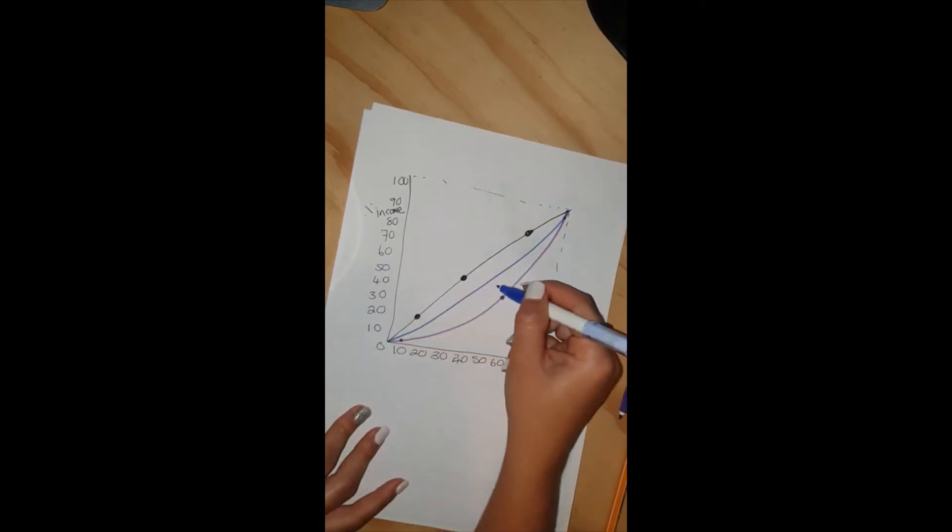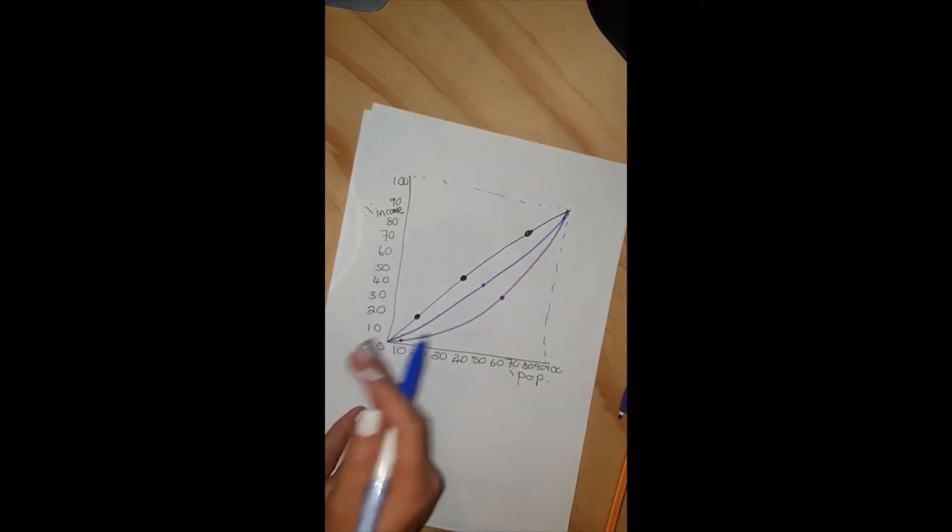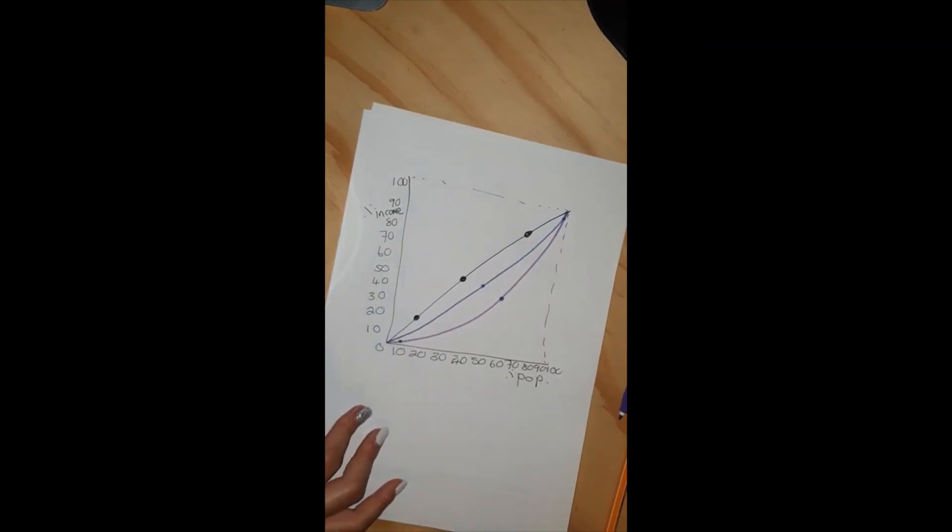Where now 50% of the population earns about 40% of the income, and 40% of the population earns about 30% of the income.